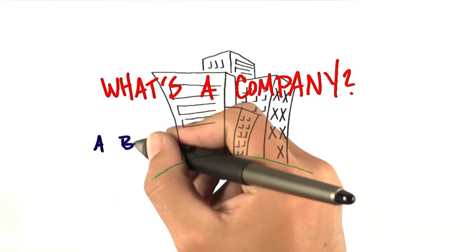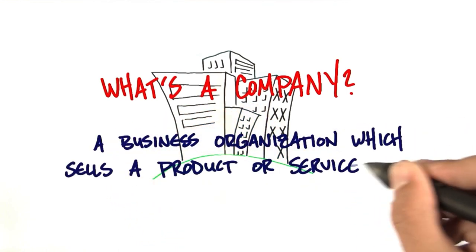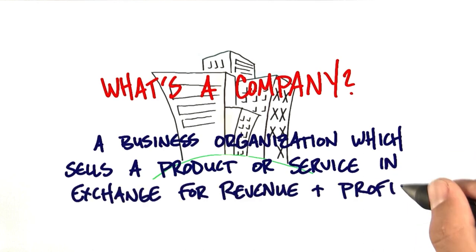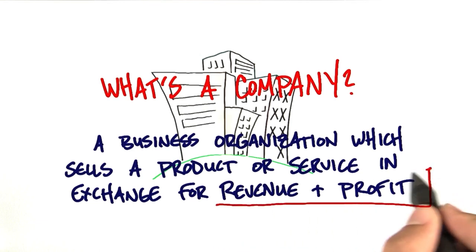A company is a business organization which sells a product or service in exchange for revenue and profit. So explicitly for the purpose of this class, I'm eliminating non-profits. Let me be clear, you could use the business model canvas and customer development to go through the process for non-profits, but actually having some goals that are fairly concrete, revenue and profit, allows us to measure whether we're succeeding and failing in very clear ways.